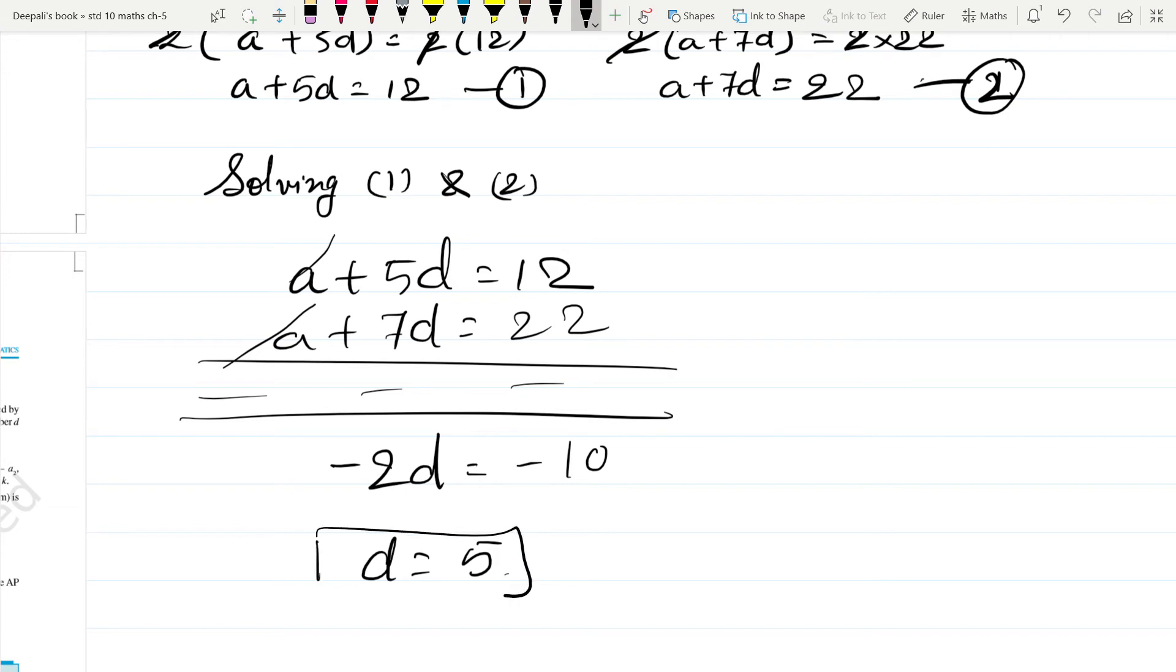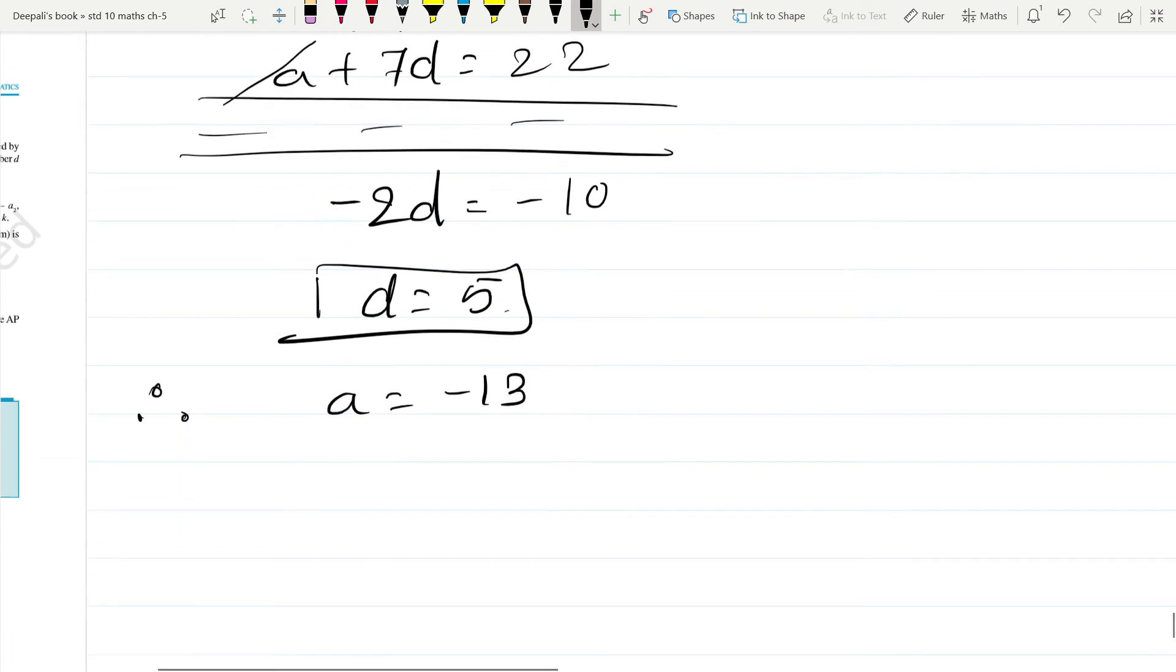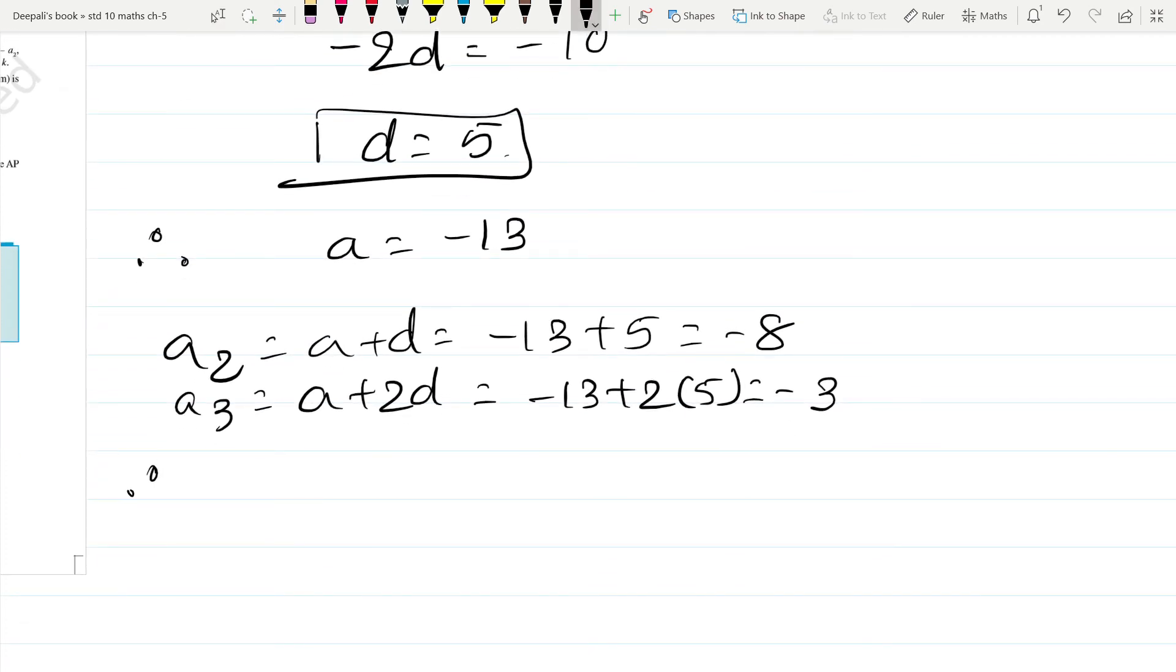Now if D is equal to 5, therefore A is equal to minus 13. Now A2 will be A plus D is equal to minus 13 plus 5 is equal to minus 8. And A3 is equal to A plus 2D is equal to minus 13 plus 10 is equal to minus 3. Therefore the AP will be minus 13, minus 8, minus 3.